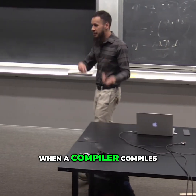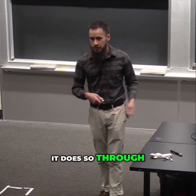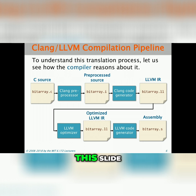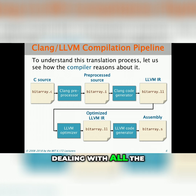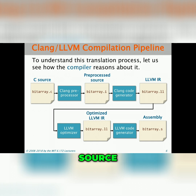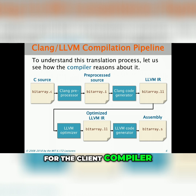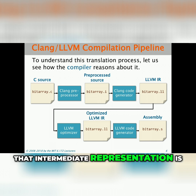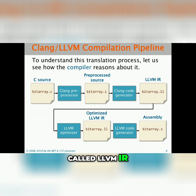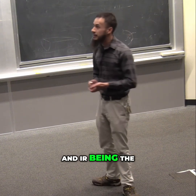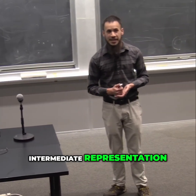When a compiler compiles a program, it does so through a sequence of stages, which are illustrated on this slide. Starting from the C code, it first pre-processes that code, dealing with all the macros, and that produces pre-processed source. Then the compiler translates that source code into an intermediate representation. For the Clang compiler that you're using, that intermediate representation is called LLVM IR — LLVM being the name of the underlying compiler, and IR being the creative name for the intermediate representation.